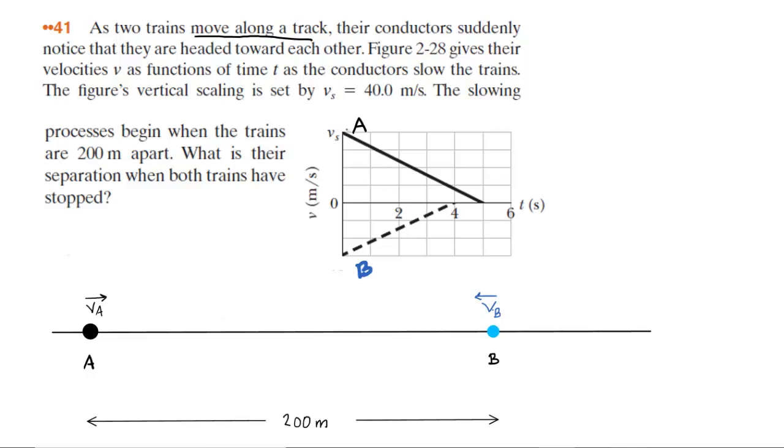If we look at the graph, we have two lines. We will call the solid line Train A and the dashed line Train B. You might notice that Train A initially at time zero has a positive velocity. We can see right here that the velocity is along the positive y-axis or the positive velocity axis, and therefore we have shown Train A initially moving to the right.